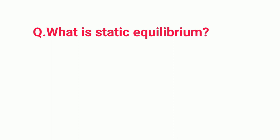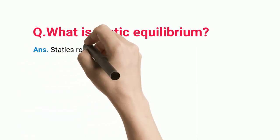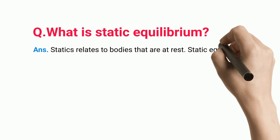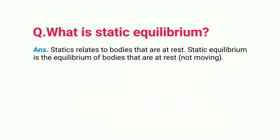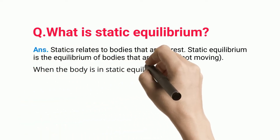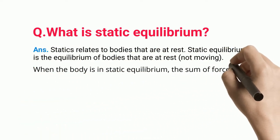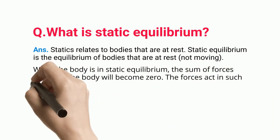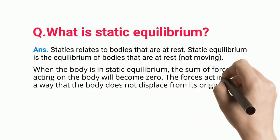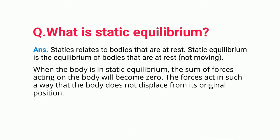What is static equilibrium? Statics relates to bodies that are at rest. Static equilibrium is the equilibrium of bodies that are at rest, not moving. When the body is in static equilibrium, the sum of forces acting on the body will become zero. The forces act in such a way that the body does not displace from its original position.